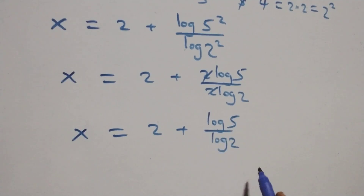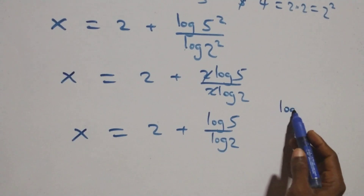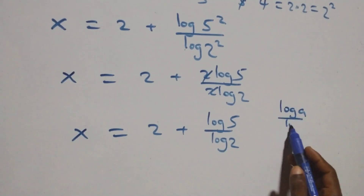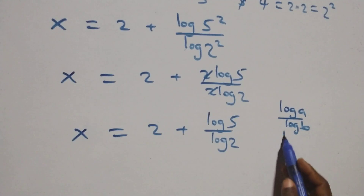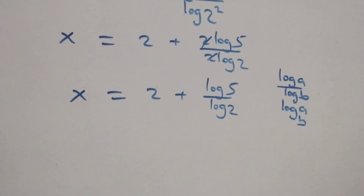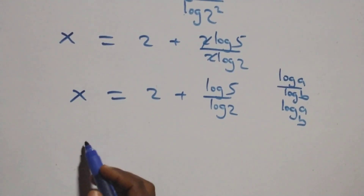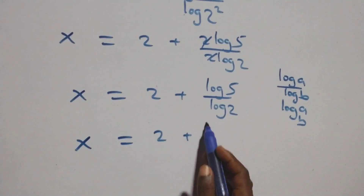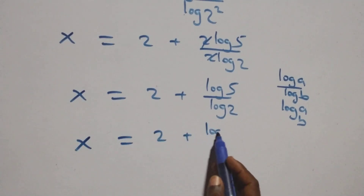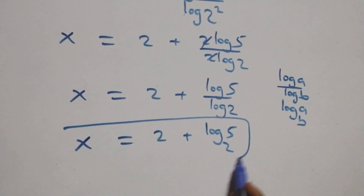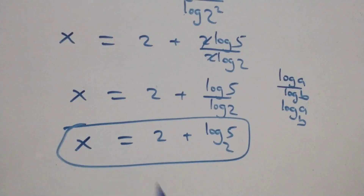Here we apply the change of base formula: log a over log b is the same thing as log a to base b. So all we have here becomes x equals 2 plus log 5 to base 2. Here we have the value of x for this problem.